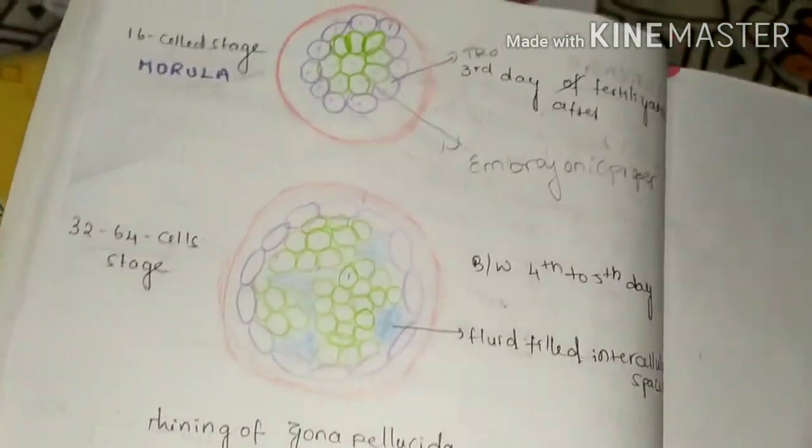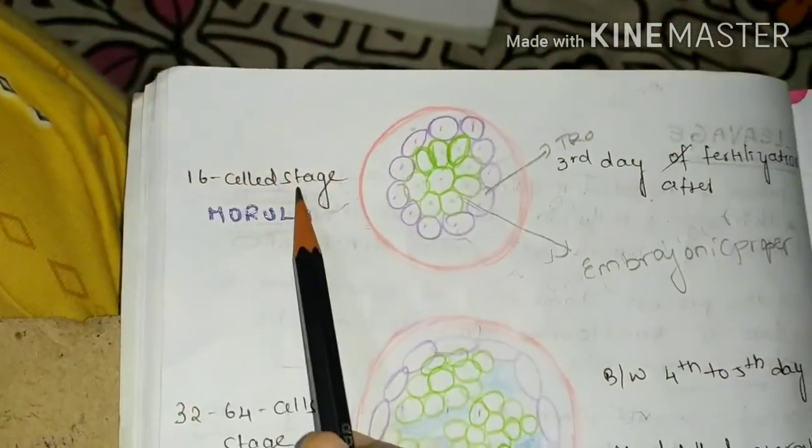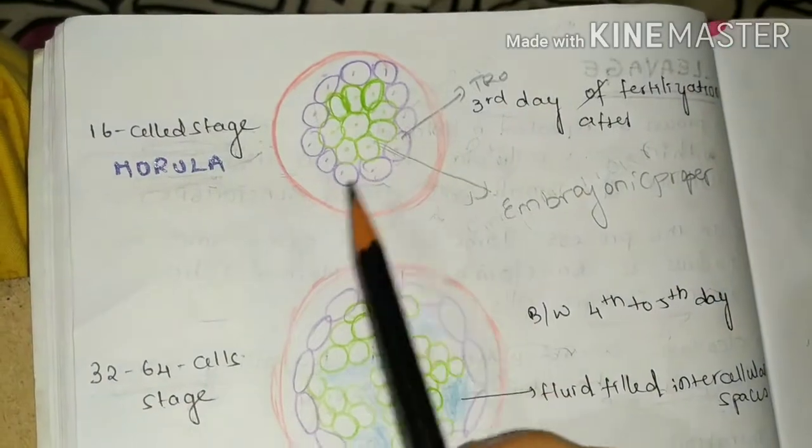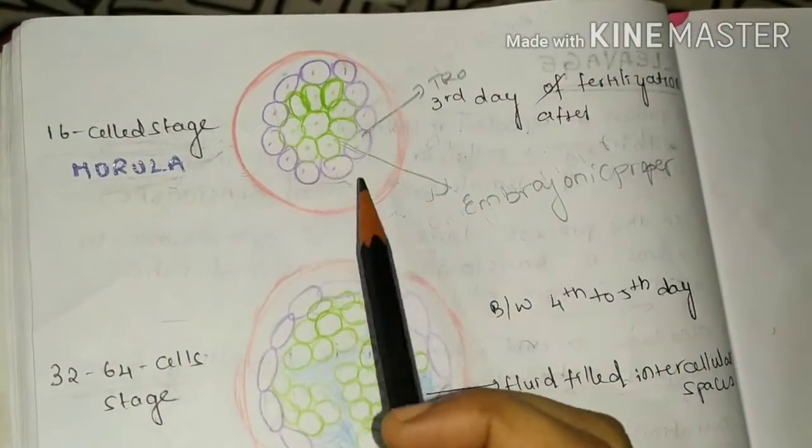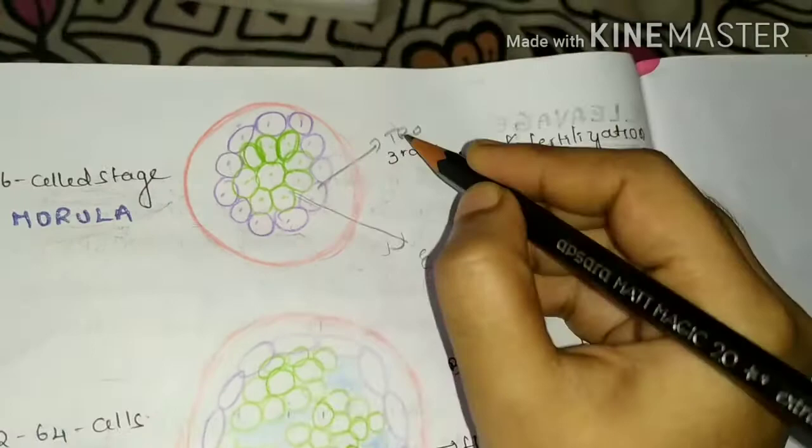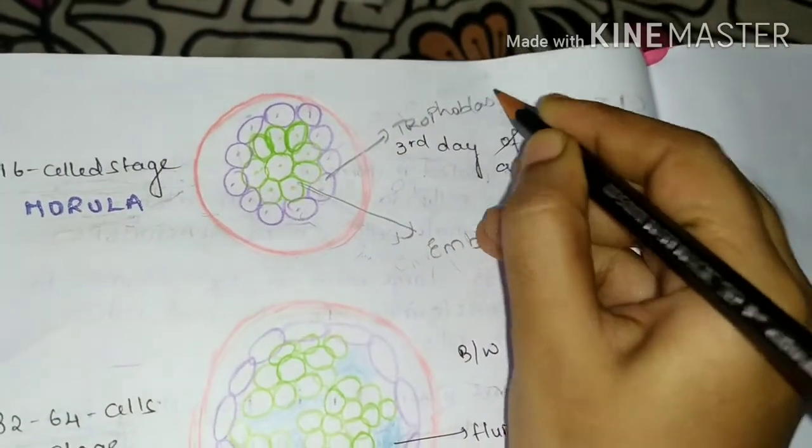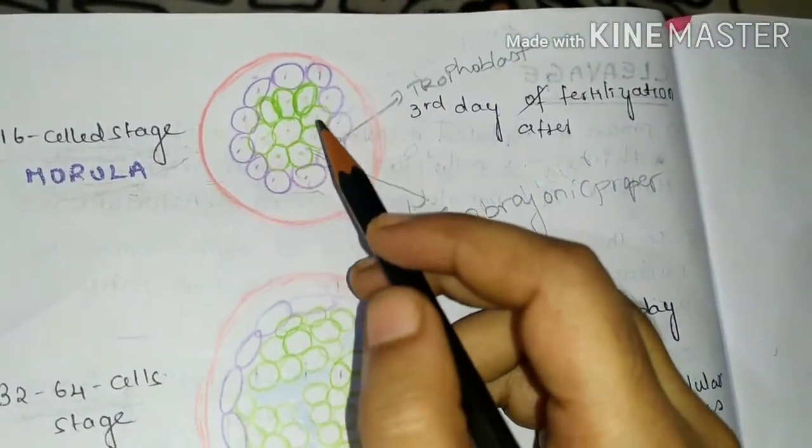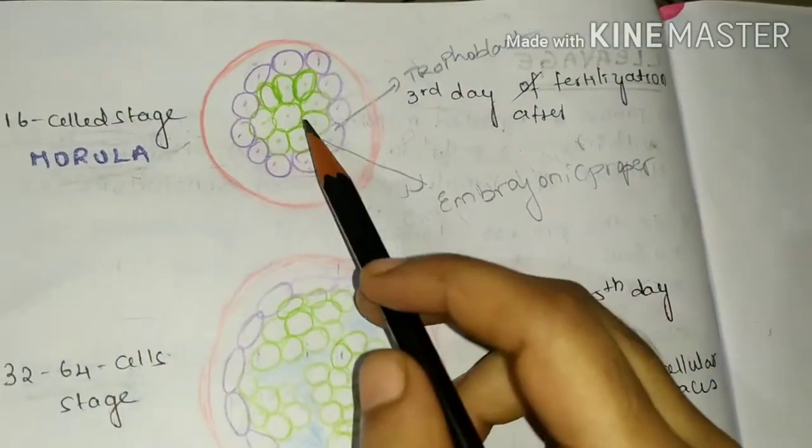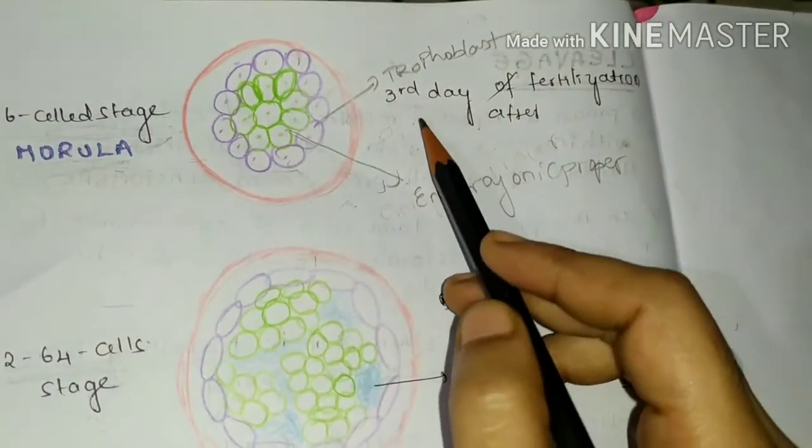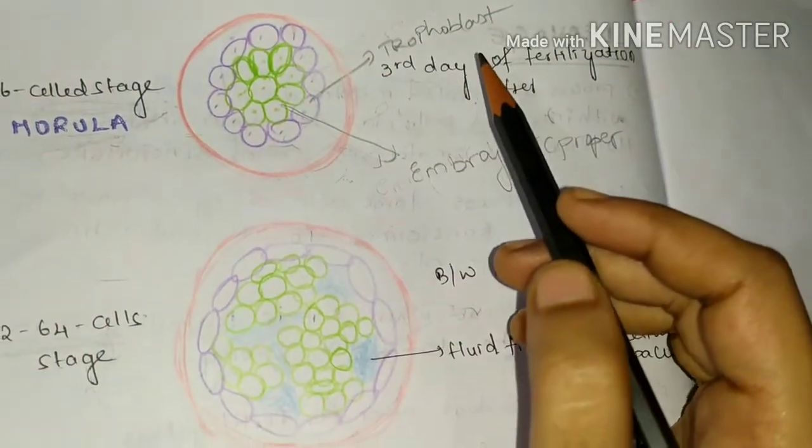And the next stage is morula. It is 16-cell stage. It looks like a mulberry, hence it is called morula. Outer cells of this morula form outer cell mass. They form trophoblast. Whereas inner cells are called inner cell mass. They form embryonic proper, hence these are also called as embryoblast. This is formed after third day of fertilization.